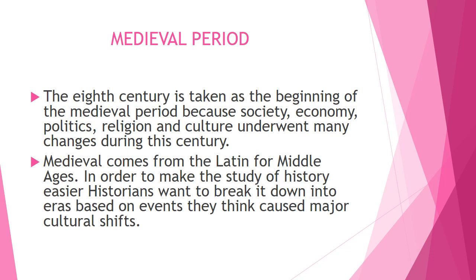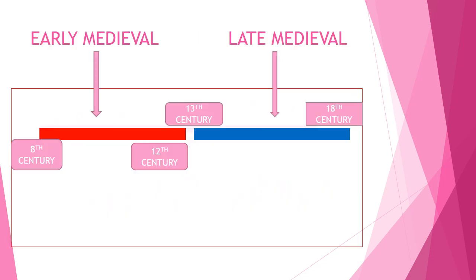The word medieval comes from the Latin word meaning Middle Ages. In order to make it easier, historians wanted to break the study of history into eras based on the events they think caused major cultural shifts. On the timeline, as you can see, the medieval period is divided into early medieval period and later medieval period — the early spans from the 8th to 12th century, and the later is from the 13th to 18th century.